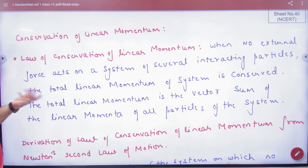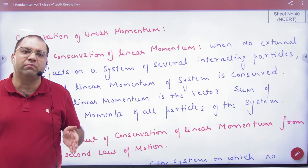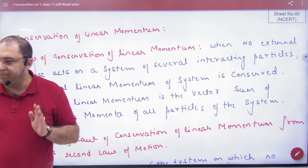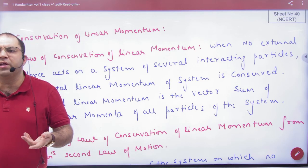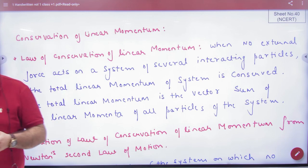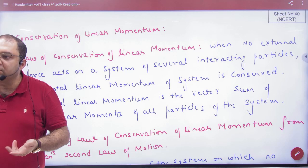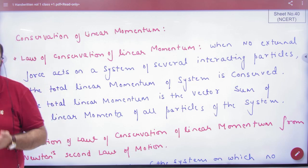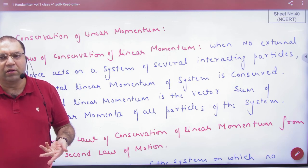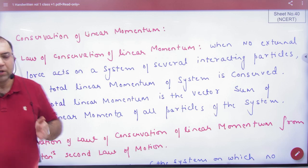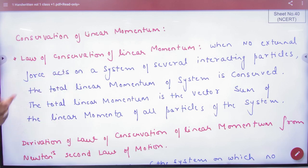This applies to several interacting particles — it is not limited to just two. In our examples, we have conserved momentum with two particles, such as bullet and gun, or boat and man. But actually, if we have two, three, or even three hundred interacting objects, the linear momentum conservation is still valid. We have done two or three examples, but the examples can be more. This is why it says 'several interacting particles' — there is no fixed number.